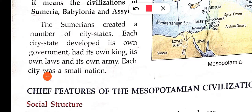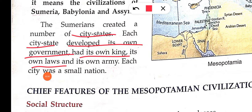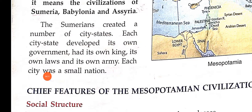Sumerians created a number of city-states. Each city-state developed its own government, and every state had its own king and its own laws and its own army. Each city was a small nation. Do remember: Sumerians created a number of city-states, each with its own government, rules, and army.